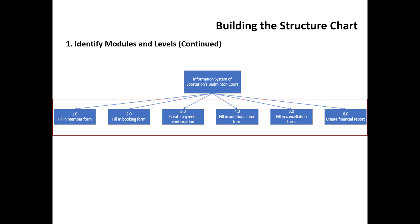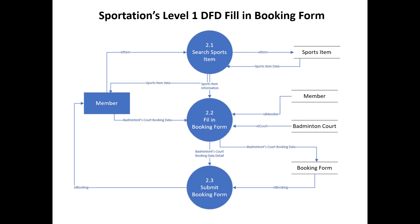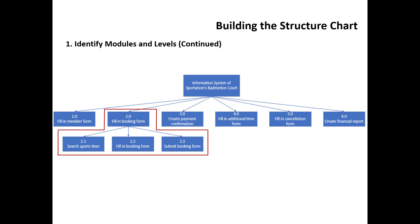The six processes are: fill-in member form, fill-in booking form, create payment confirmation, fill-in additional time form, fill-in cancellation form, and create financial report. These patterns continue through all the data flow diagram levels. The level one data flow diagram created for fill-in booking form is placed below the fill-in booking form module, called a subordinate module because it is controlled by a module at a higher level.